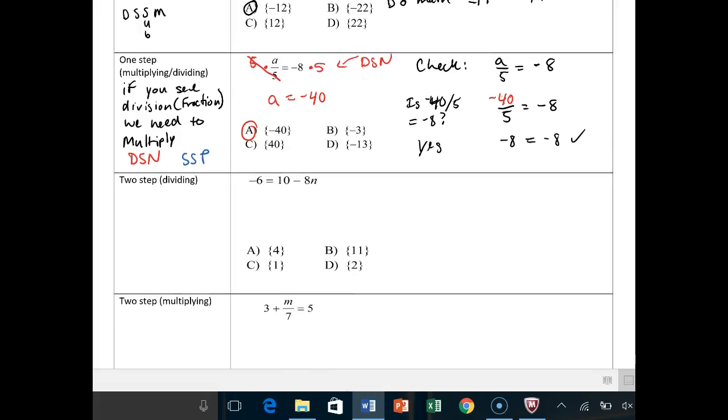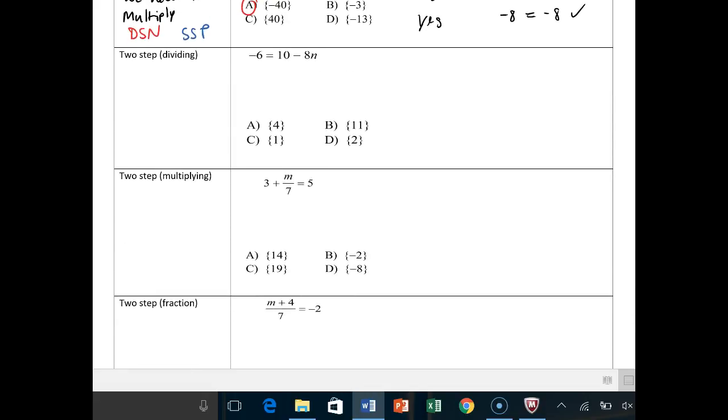So now we have a two-step equation with division. Here, you remember, it's Tetris. Add a negative or add a positive to both sides. And then divide.